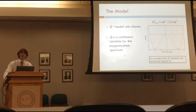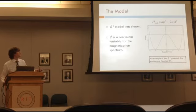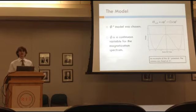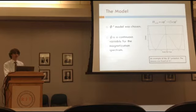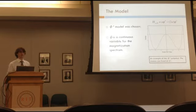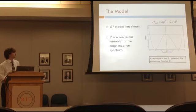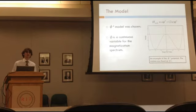The model we chose is called the phi-fourth model. It has a general form with a quarter polynomial minus a quadratic term. The phi term is a variable that represents our magnetization, and we give it a continuous spectrum. With the coefficient of the quadratic term set to two times a, we get a potential with preferred minima of minus one and one. This corresponds to preferring a spin-up or a spin-down.